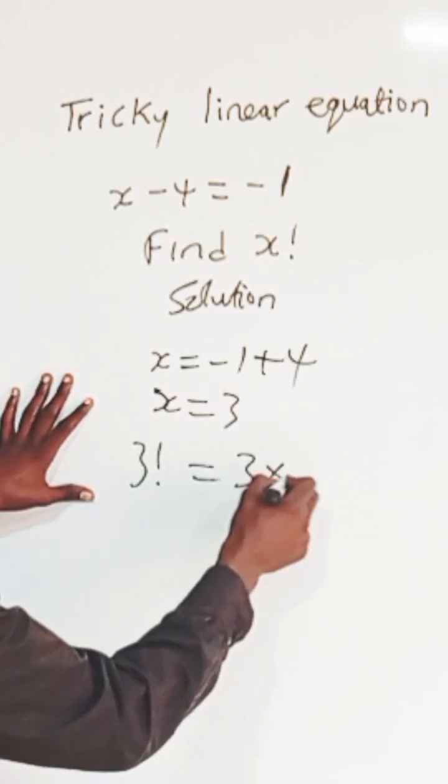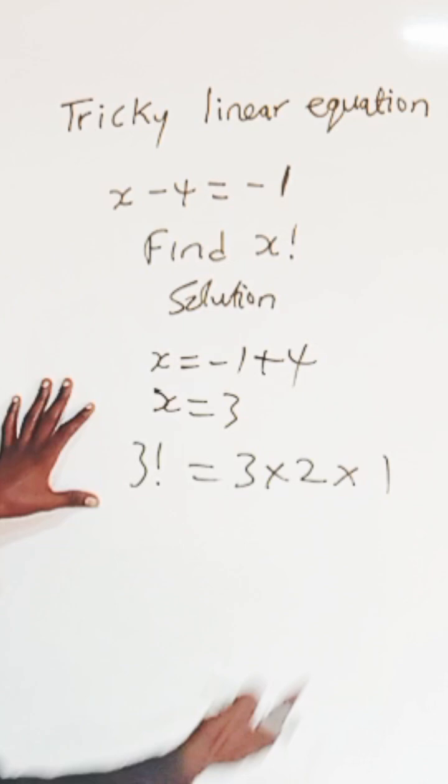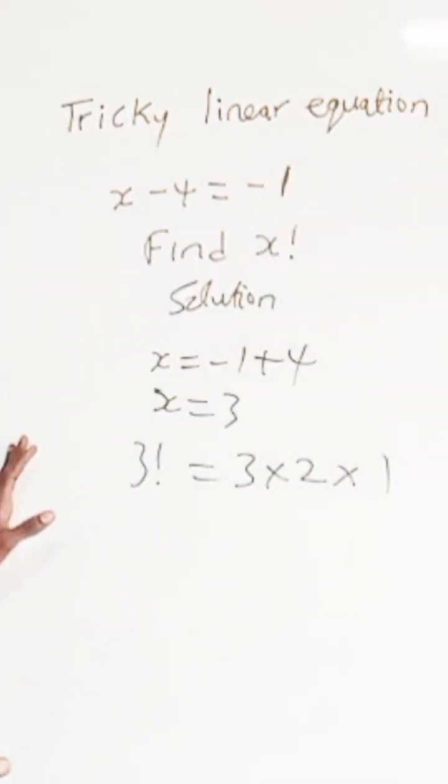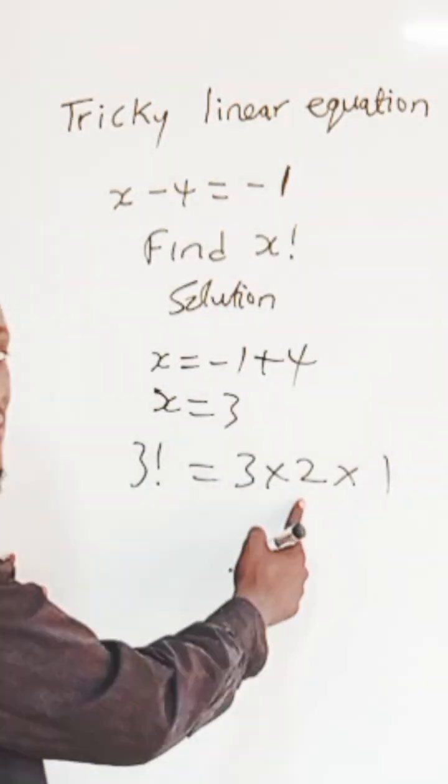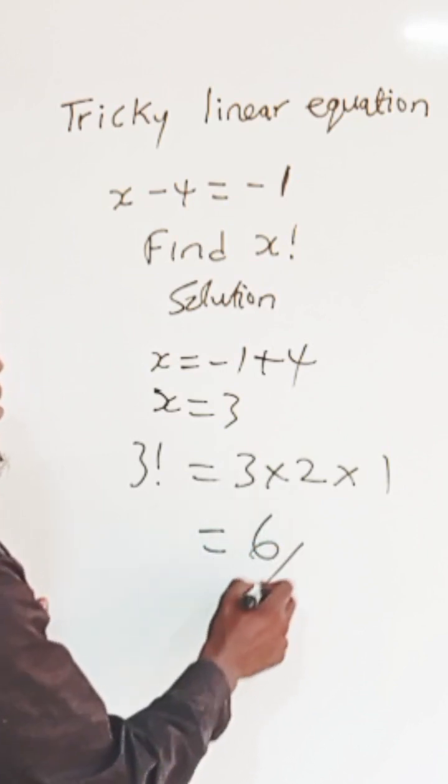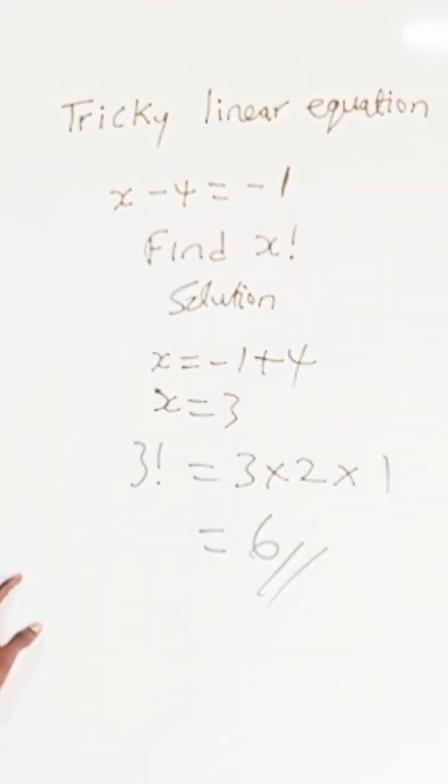Once it gets to 1, stop at that. So 3 times 2 is 6, and 6 times 1 is 6. So our final answer is 6.